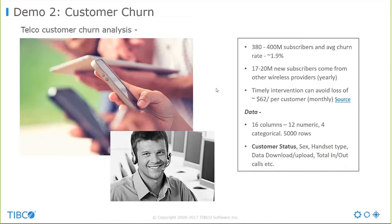We'll also try to understand the most important features. The data has 16 columns — 12 numeric and 4 categorical — with about 5,000 rows. Columns include customer status, gender, handset type, data downloaded or uploaded last month, and incoming or outgoing call counts. The target of interest is customer status: a binary value where 1 means churn and 0 means active. This is essentially a classification problem.